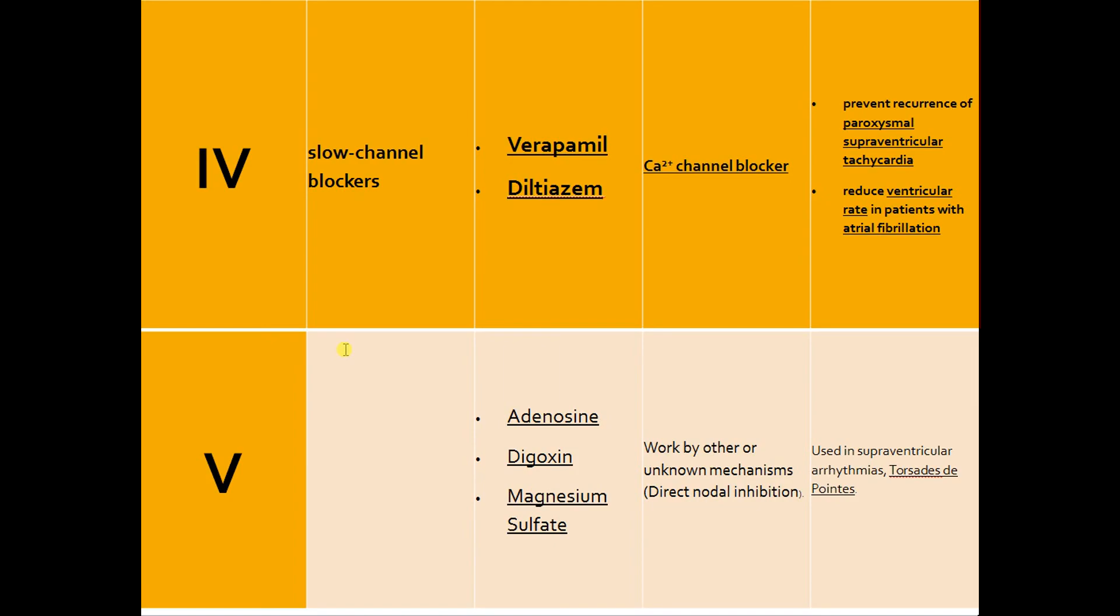To summarize, Vaughan Williams classification includes five classes: Class 1 affects sodium channels, Class 2 is beta blockers, Class 3 is action potential duration prolonging drugs, Class 4 is calcium channel blockers, Class 5 is miscellaneous drugs. Thank you very much, have fun and good luck for the exams.